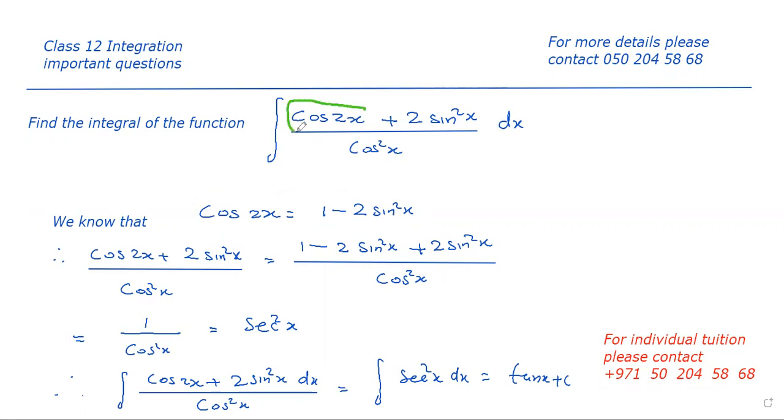So instead of cos 2x, we can substitute 1 minus 2 sin square x. So the function is changed into 1 minus 2 sin square x instead of cos 2x and plus 2 sin square x, then all divided by cos square x.